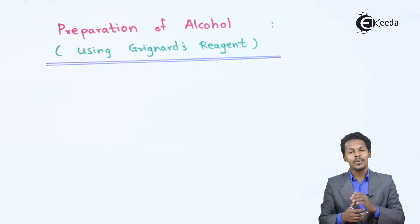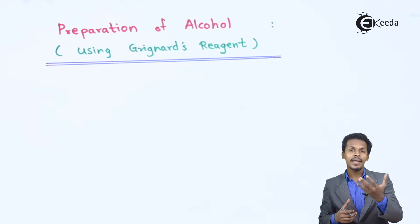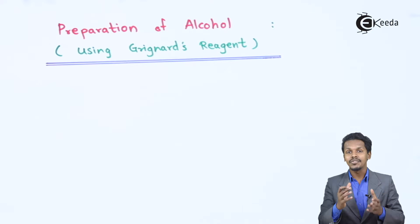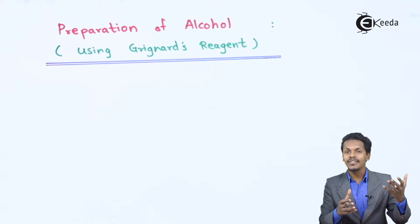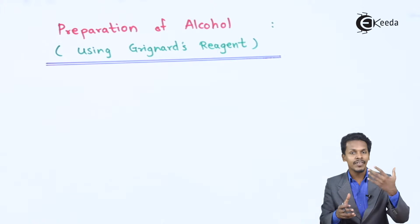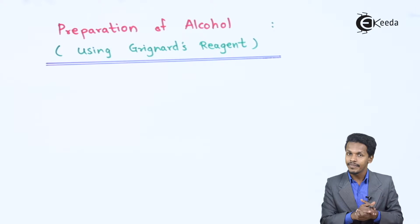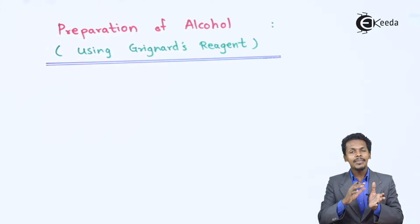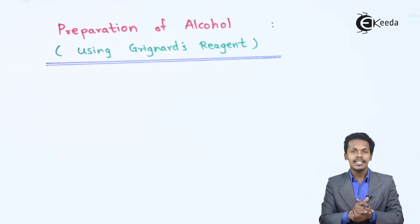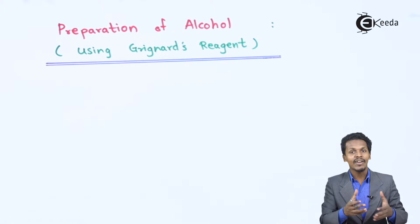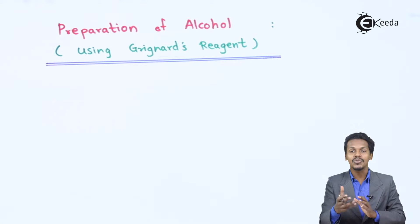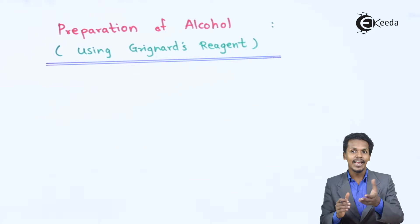In this topic we are going to talk about how we can prepare alcohol using Grignard reagent. Grignard reagents are widely used whenever we have to react with an aldehyde or whenever we have to react with a ketone. Let me give you an idea of what happens when a Grignard reagent is reacted with an aldehyde or ketone to get alcohol.